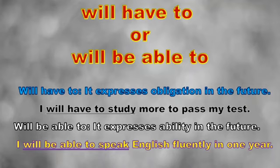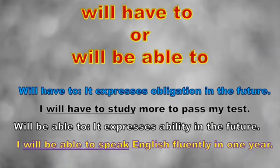The first one, 'will have to,' expresses obligation in the future. For example: 'I will have to study more to pass my test' — it's an obligation in the future. 'Will be able to' expresses ability in the future. For example: 'I will be able to speak English fluently in one year' — it expresses an ability you can reach in one year.